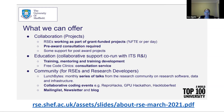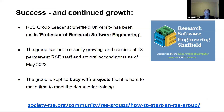The RSE group also provides a hub for community-type events. This has been a very successful model — the University of Sheffield group leader has now been made professor of research software engineering. The group has been steadily growing and consists of 13 permanent staff members and several secondments. The group is kept so busy with projects that it's actually hard to make time to meet demand for training, and there is demand for training.